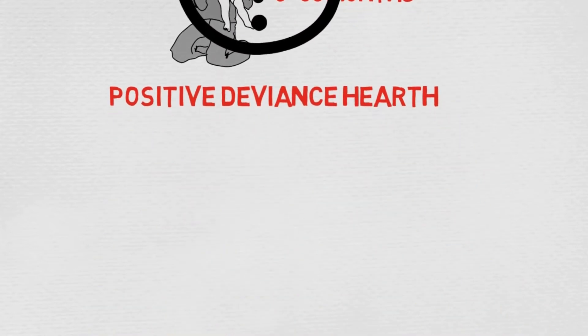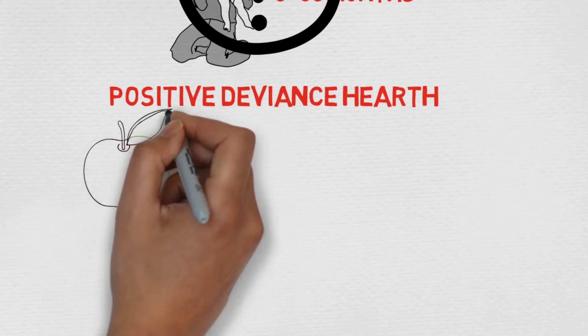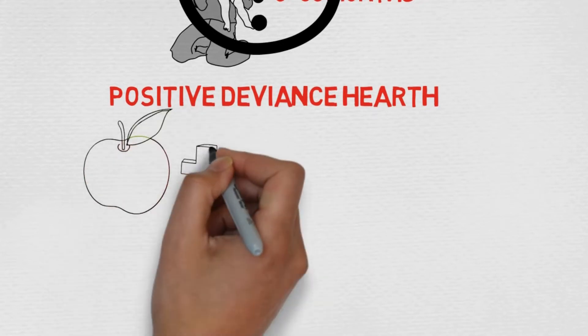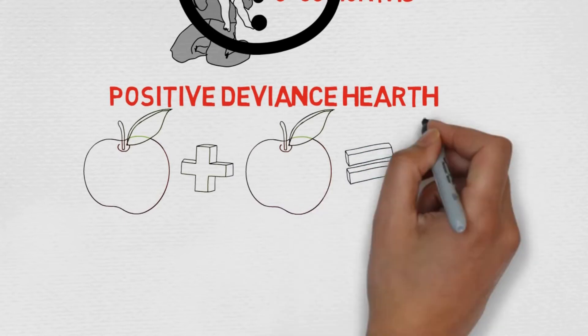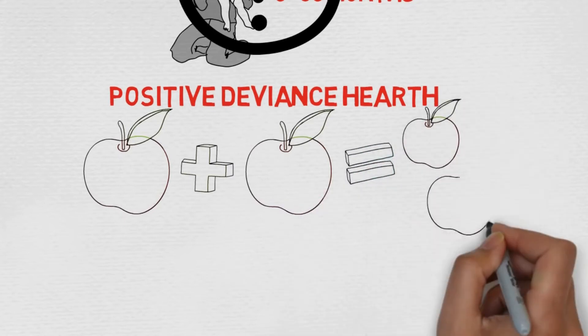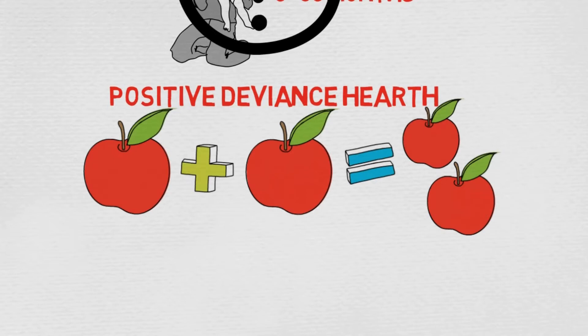Positive Deviance is when community members practice behaviors which result in positive outcomes. Positive Deviance are the caregivers or families from low-resource households who practice uncommon yet positive feeding, hygiene, caring, and health-seeking behaviors.